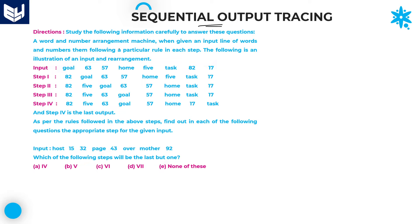A word and number arrangement machine, when given an input line of words and numbers, follows a particular rule in each and every step. We need to identify that rule first. Once you get that particular rule, it is very easy to get the answer for each and every question.